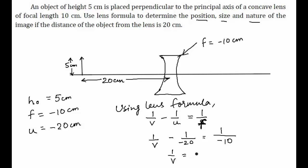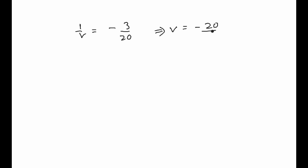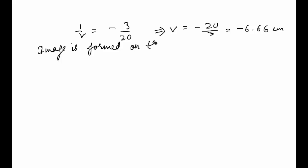Rearranging, 1/v equals 1/(minus 10) minus 1/20, which comes out to minus 3/20. Therefore v equals minus 20/3, which is approximately minus 6.66 centimeters.